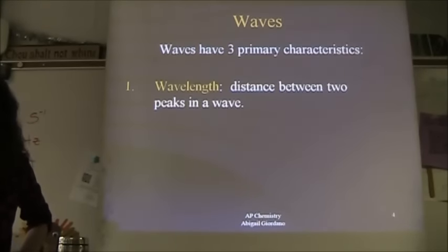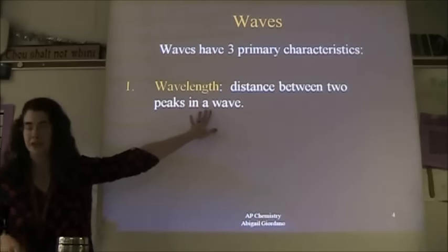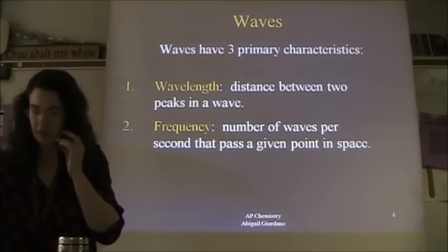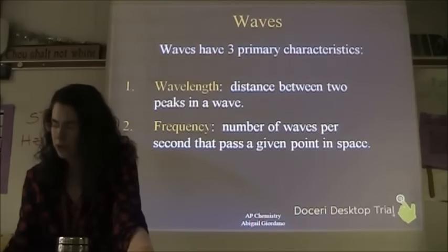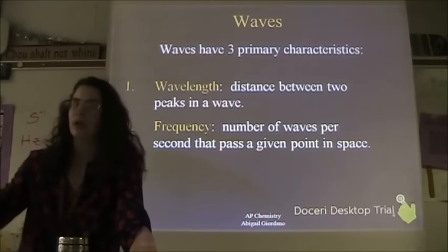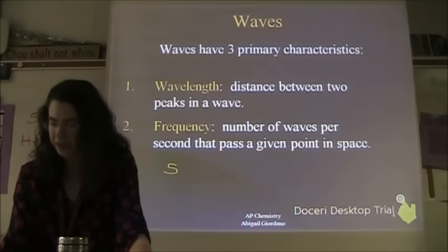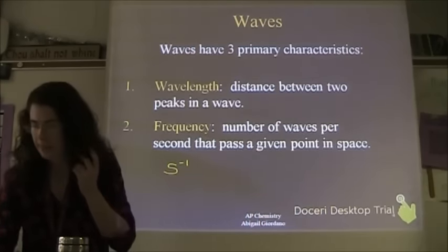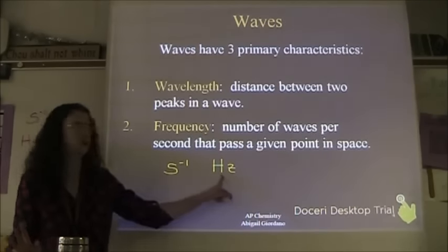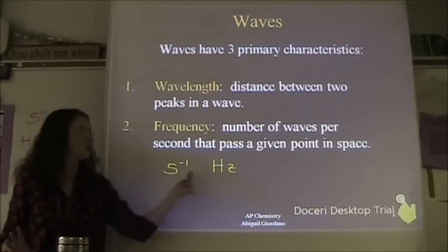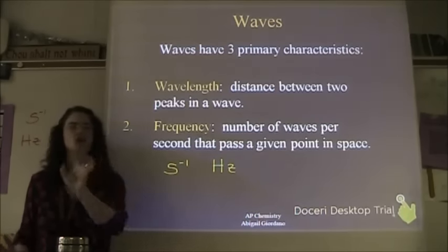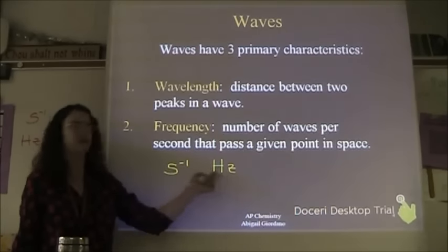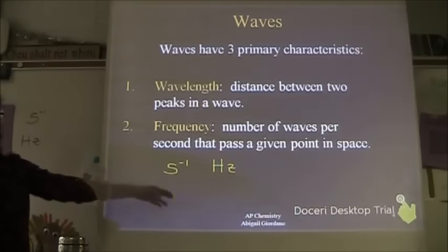Wavelength is primarily measured in units of meters. Frequency has two units that are actually the same thing: inverse seconds (s⁻¹) or hertz (Hz) — just like torr and millimeters of mercury represent the same thing. It doesn't matter which one you use.